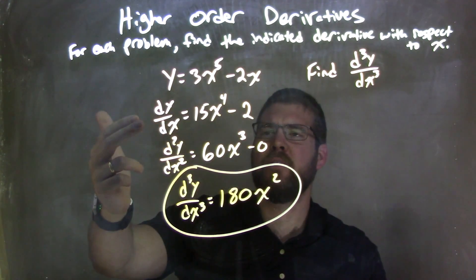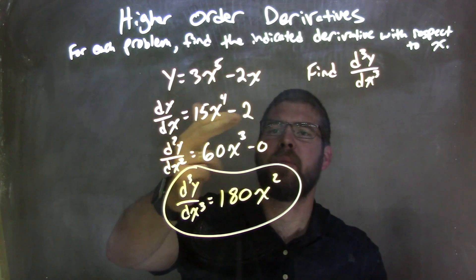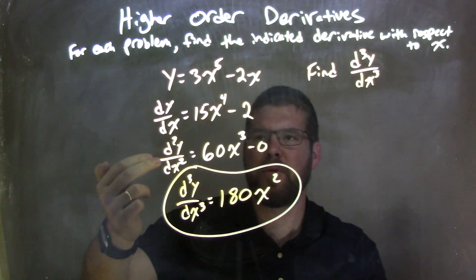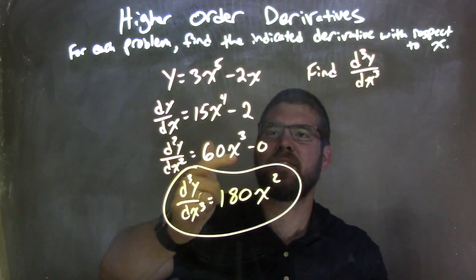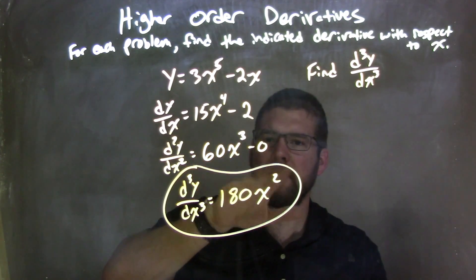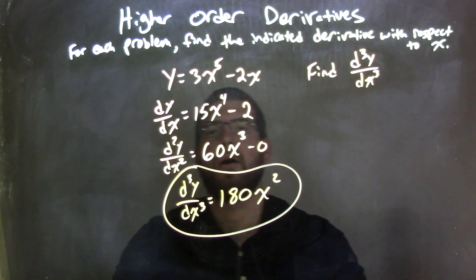So I take the first derivative, and that gives me 15x to the fourth power minus 2 using the power rule. Then again, I use the power rule a second time to get 60x to the third power minus 0. And I don't really need that minus 0. I can just leave it blank.